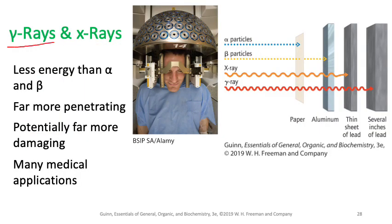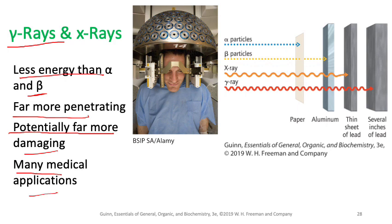Gamma rays and X-rays have less energy than alpha and beta particles, but their penetrating power is far greater. This makes them potentially far more damaging to biological tissue. A thin sheet of lead can stop X-rays, while several inches of lead are required to stop gamma rays — making gamma radiation the most penetrating of the four types.